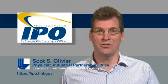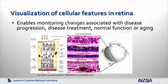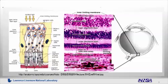The visualization of the back of the eye at the cellular level is potentially revolutionary because it enables monitoring of small changes associated with disease progression, with disease treatment, and with the normal function or aging of the eye. On the screen I'm showing the layers — both a schematic diagram as well as a microscope picture of tissue at the back of the eye — and these show the layers that are typically involved in disease progression.